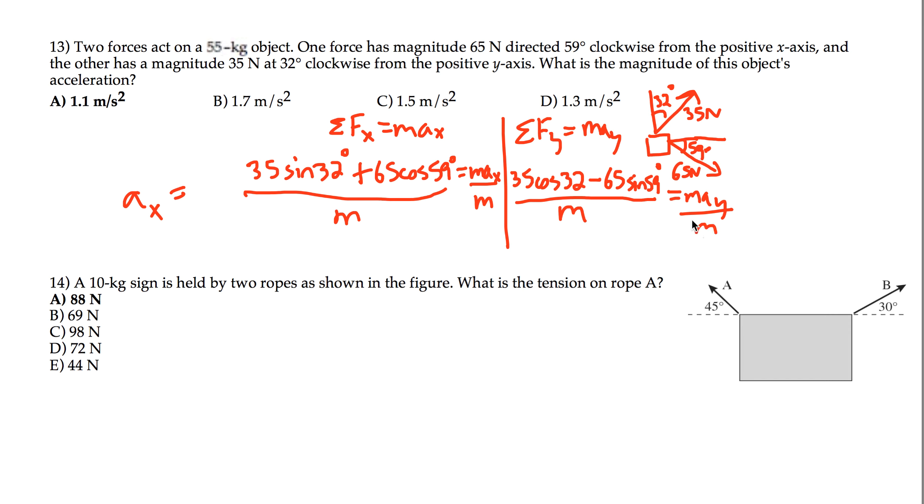So once again we can divide each side by m and we can solve for ay. This will give us ay, all of this. And then to find the acceleration, well if we know the x and the y components of the acceleration, then we can just use the Pythagorean theorem to find the magnitude of the acceleration.